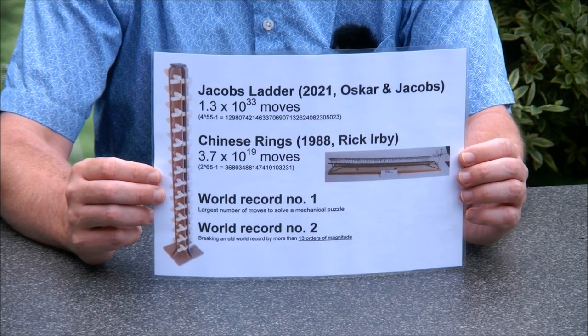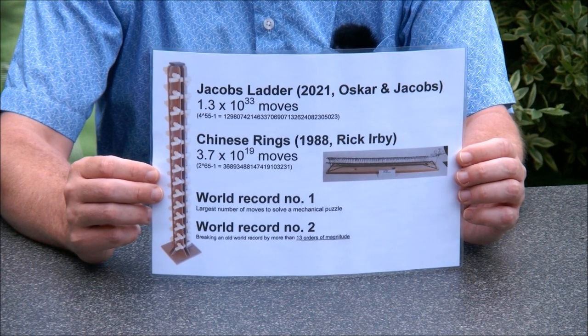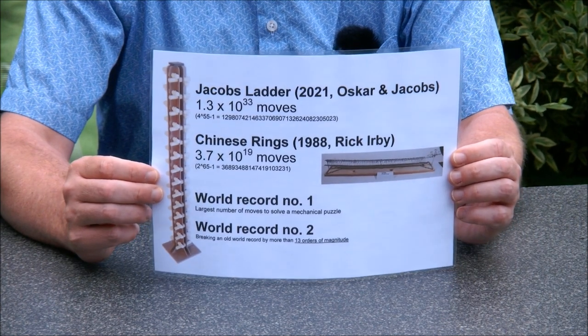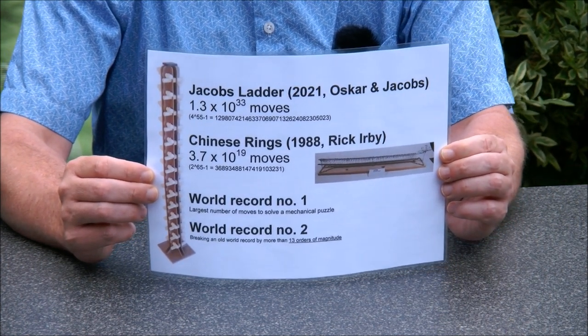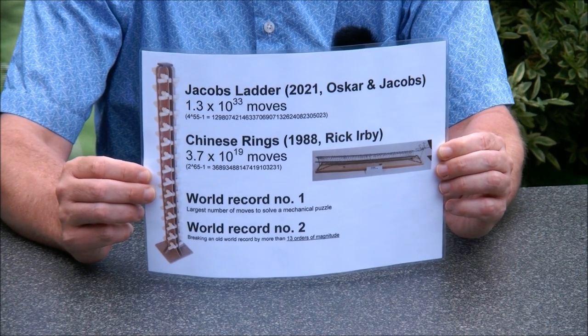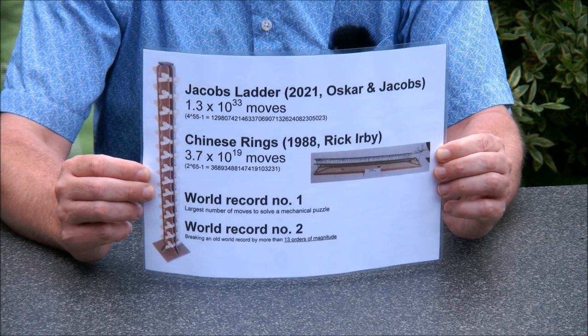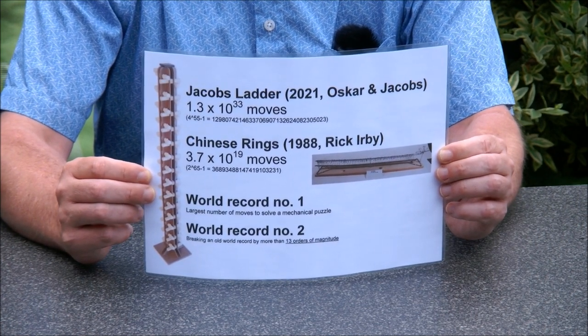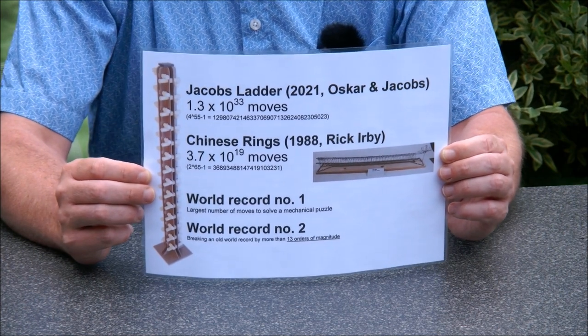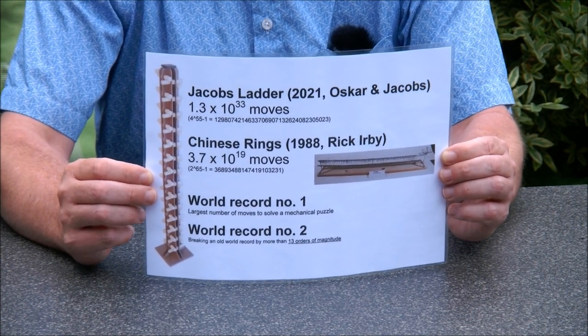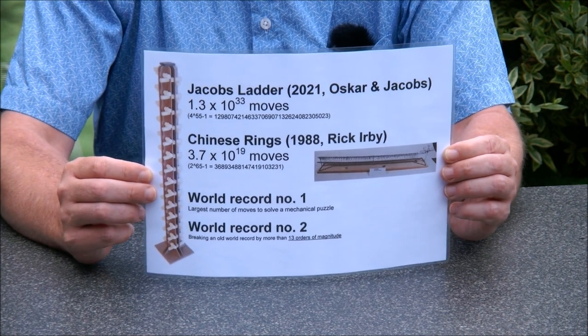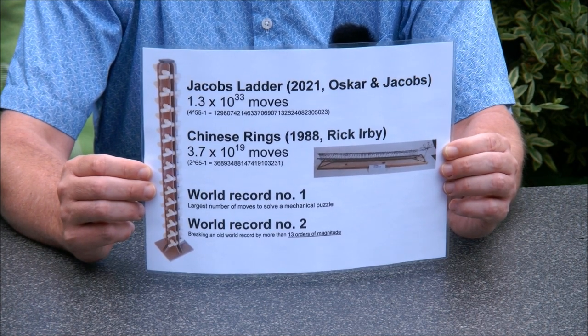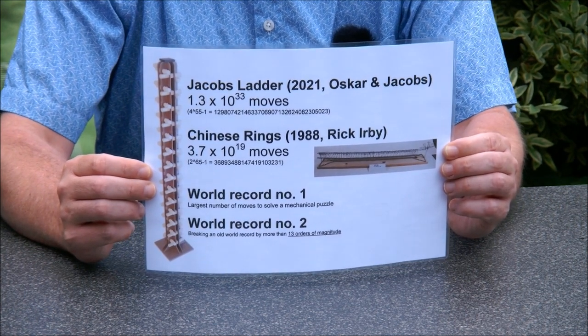The previous record was actually a 65 ring Chinese rings puzzle from 1988 by Rick Irby. And that one has only 3.7 times 10 to the 19th moves. Which is also an incredible number, but it's slightly less. So it has taken more than 30 years to break Rick Irby's world record. So the first world record that we have here is the largest number of moves to solve a mechanical puzzle.